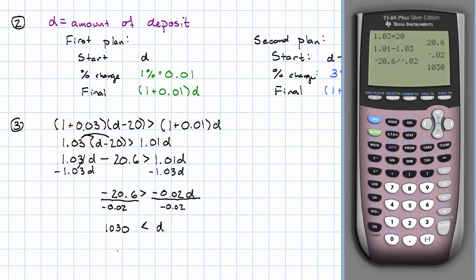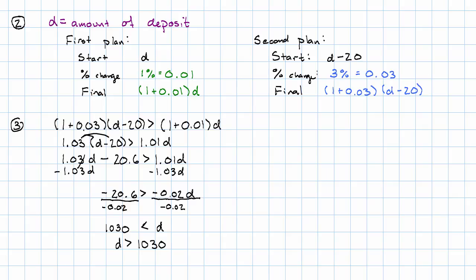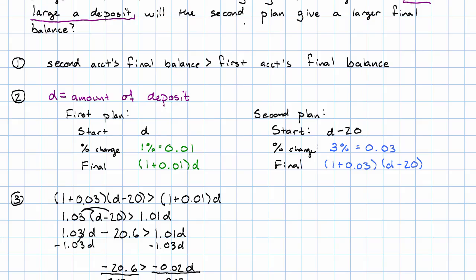Less than D. Rewriting that with the D on the left, because it's easier to read, D is greater than 1,030. For what deposits then will the second plan give a larger final balance? For deposits more than $1,030.